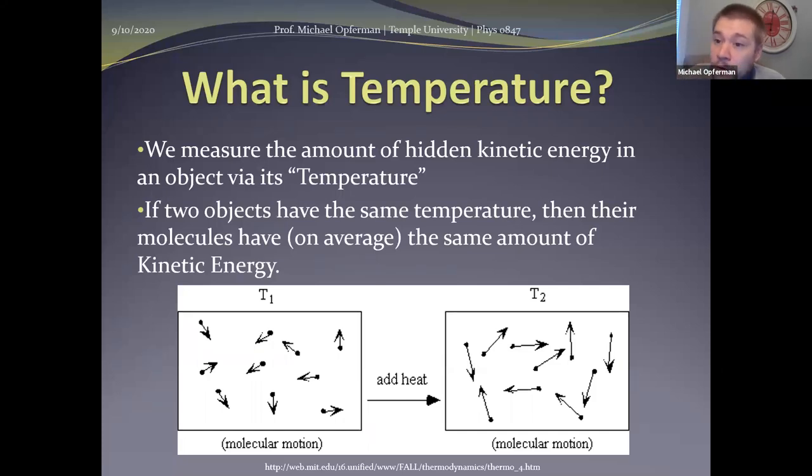Now, if we put together two things that have different temperatures, what that means is we're putting together two things where the atoms on average have different amounts of kinetic energy. So what's going to happen because of conservation of energy, the higher temperature object has more energy, the lower temperature object has less energy. So because of all these little microscopic interactions that are happening that we can't see, what's going to happen is that energy is transferred from the high temperature object to the low temperature object. So there's constantly a flow of energy coming out of higher temperature objects and going into lower temperature objects.